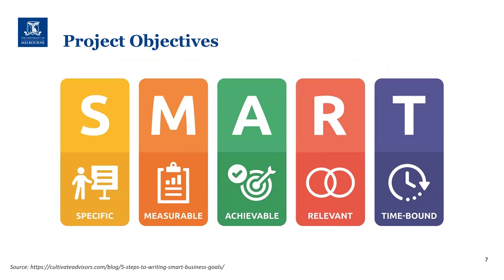How can we formulate project objectives? Using the SMART acronym: Specific, Measurable, Achievable, Relevant, and Time-bound. In tutorials we've explored variations — for example, in Scandinavia, the 'A' becomes 'Agreeable': you agree as a team this is doable, and if you fail together having agreed, then you know it wasn't possible. There are some controversies around this, but it's more or less the same concept.